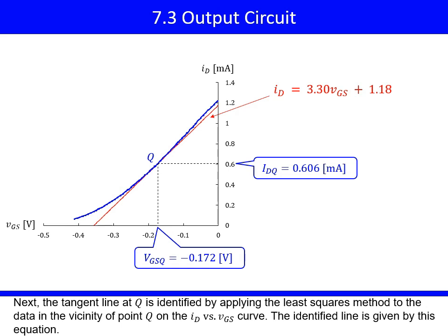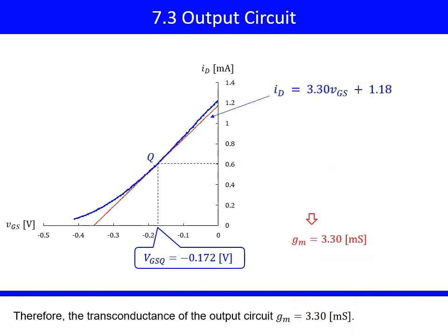Next, the tangent line at Q is identified by applying the least squares method to the data in the vicinity of point Q on the ID versus VGS curve. The identified line is given by this equation. Therefore, the transconductance of the output circuit GM is 3.30 milli-Siemens.